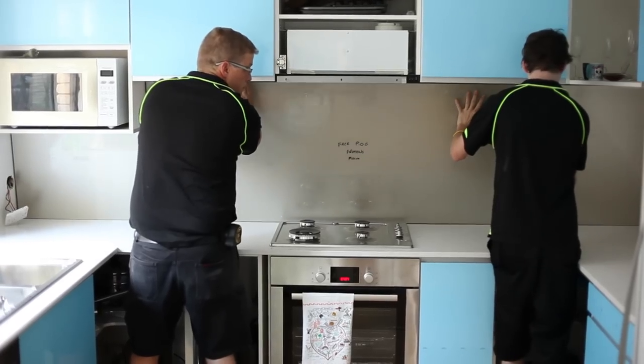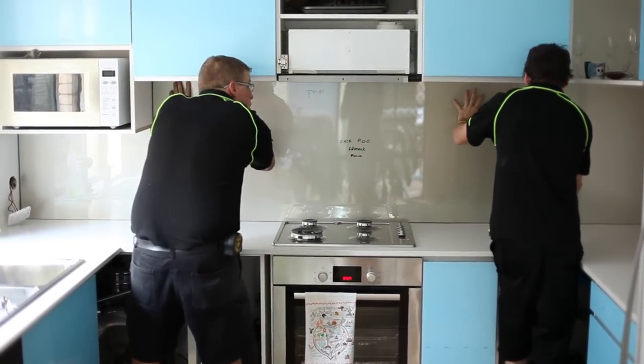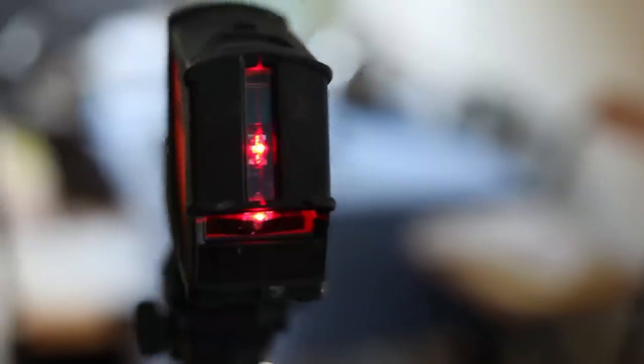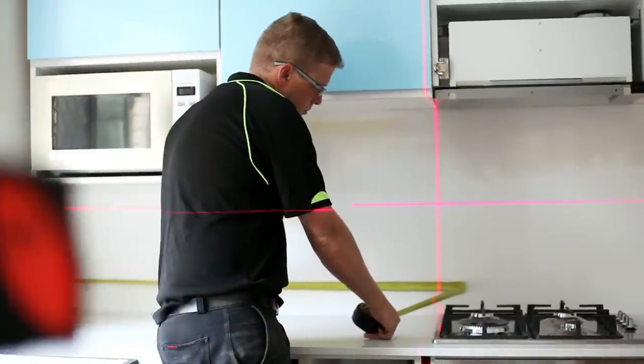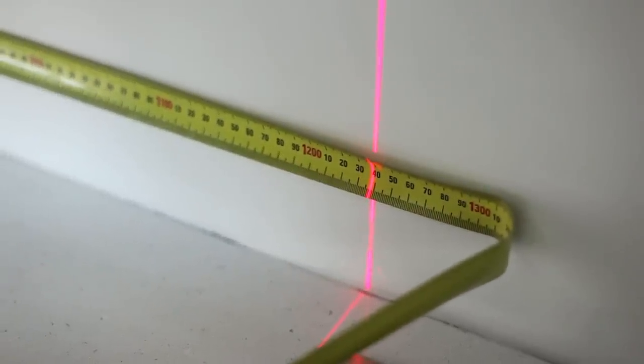With splashbacks, it's very fine work. We've got tolerances to work to. So we actually measure with a crosshair laser. And what a crosshair laser is, it actually measures all four quadrants. So you know where the bench is running out, where the cupboards are running out, if it's all square or if it's not.